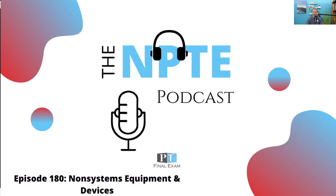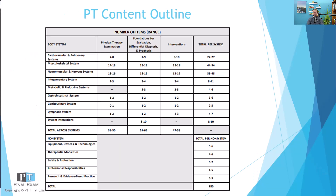Today I've got a practice question related to the non-systems. The non-systems on the NPTE are a smorgasbord of smaller subsections. There are five main categories: equipment, devices, technology, therapeutic modalities, safety and protection, professional responsibilities, and research and evidence-based practice.